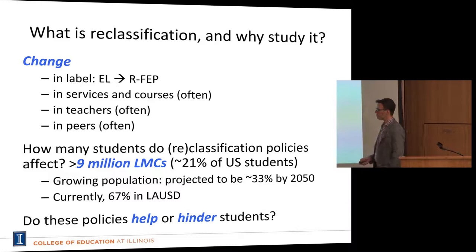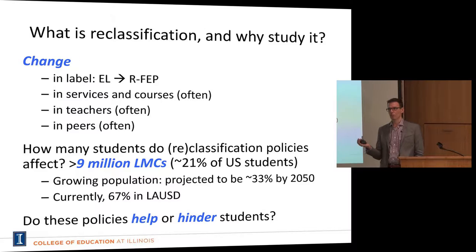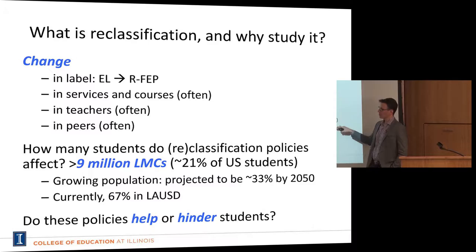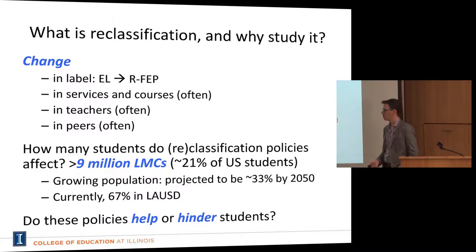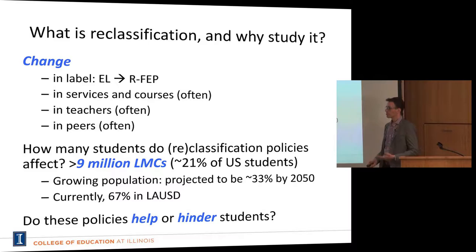Over one-fifth of the current U.S. student population in public schools comes from a home where a language other than English is spoken — these are language minority children. They are affected by reclassification policies and classification policies. This is a large and growing student population, projected to be about one-third of the U.S. student population by 2050. Currently about two-thirds of students in LAUSD are language minority children.